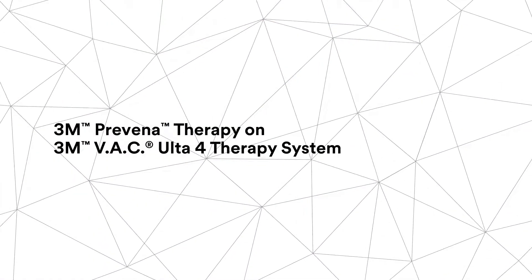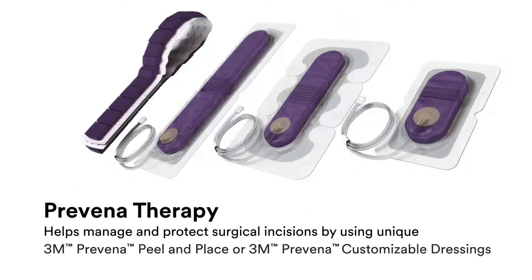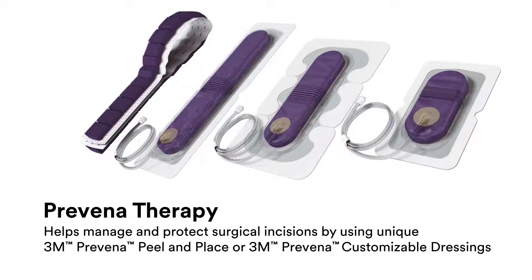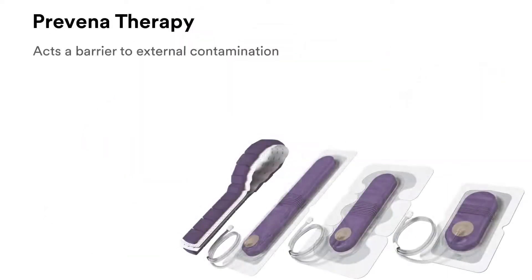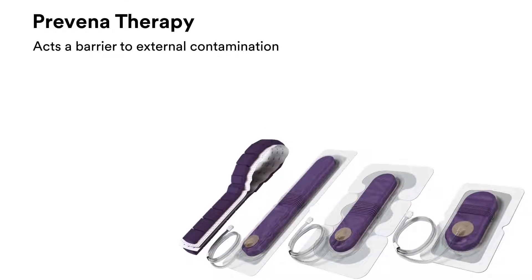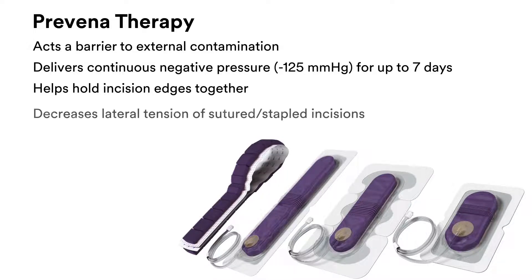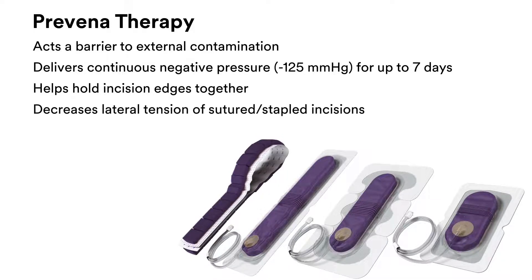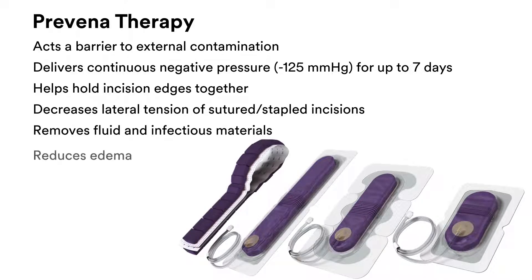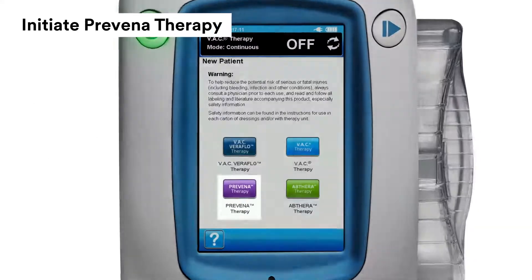3M Praveena therapy helps manage and protect surgical incisions using unique 3M Praveena peel and place or 3M Praveena customizable dressings by acting as a barrier to external contamination, delivering continuous negative pressure for up to 7 days, helping hold incision edges together, decreasing lateral tension of sutured or stapled incisions, removing fluids and infectious materials, and reducing edema.